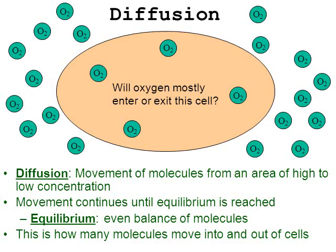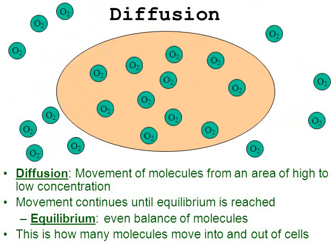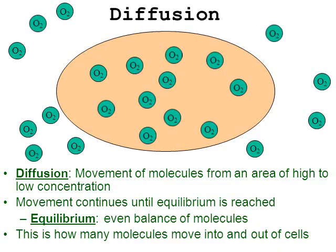Here we have a cell surrounded by oxygen — O2. My question is: will oxygen mostly enter or mostly exit the cell? Find the high concentration — you can see it's on the outside of the cell. So by diffusion moving from high to low, oxygen is going to move from the outside to the inside. Notice how a couple oxygens exit the cell, but the vast majority entered. And now there's a nice balance — we have that state called equilibrium.